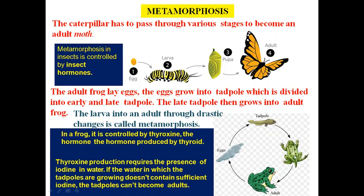In frogs, the eggs are first converted into tadpoles, then a larger tadpole, and then an adult frog. The adult frog lays eggs; the eggs grow into early and late tadpoles, and the late tadpole then grows into an adult frog. This transformation of larvae into an adult through drastic changes is called metamorphosis. In insects, metamorphosis is controlled by insect hormones, whereas in frogs it is controlled by thyroxine hormone.